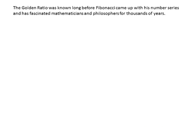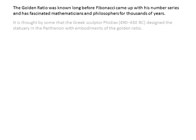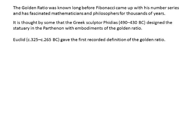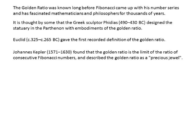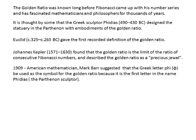The golden ratio was known long before Fibonacci came up with his number series and has fascinated mathematicians and philosophers for thousands of years. It is thought by some that the Greek sculptor Phidias designed the statuary in the Parthenon with embodiments of the golden ratio. Euclid gave the first recorded definition of the golden ratio. Johannes Kepler, the great astronomer, found that the golden ratio was the limit of the ratio of consecutive Fibonacci numbers — that's what we were just looking at — and he described the golden ratio as a precious jewel.